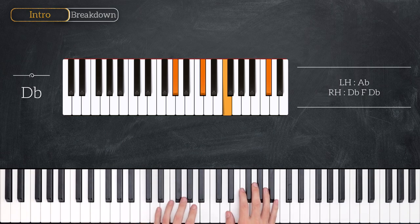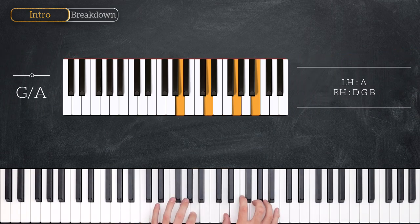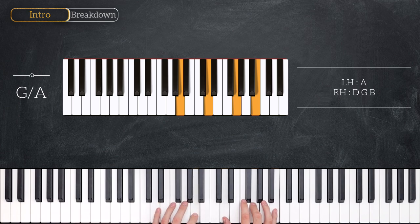Next up we have a G major over A. So G over A is A for the left hand, D, G and B for the right hand.